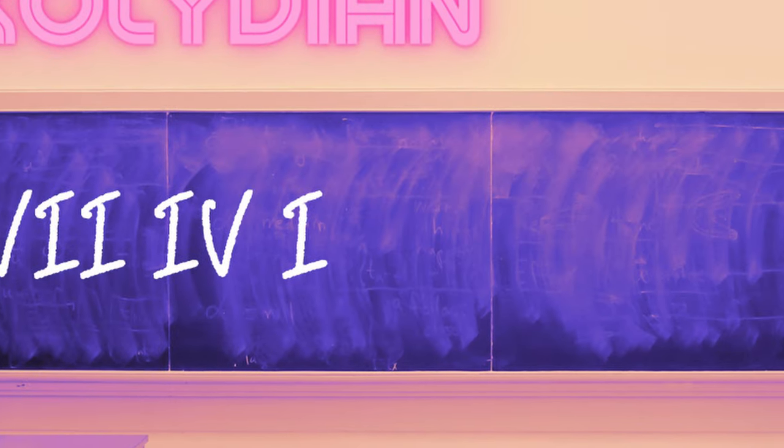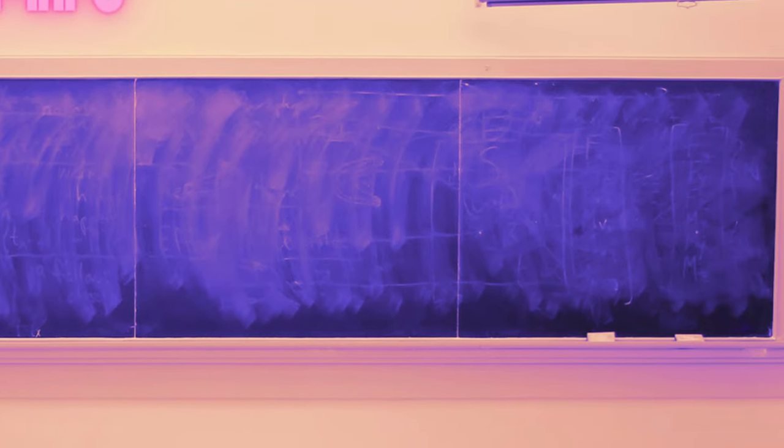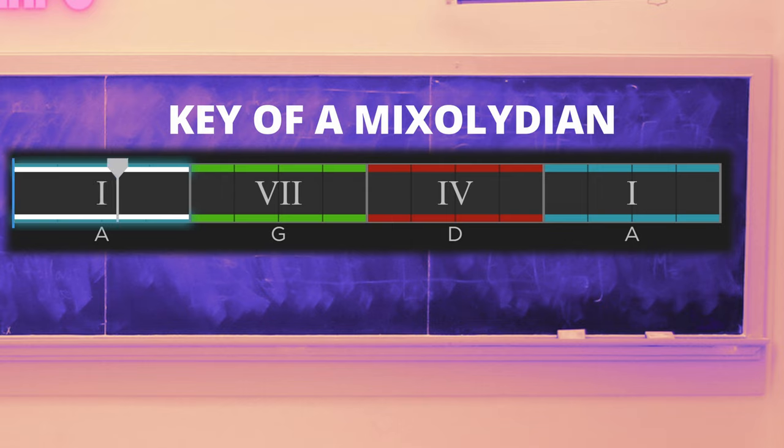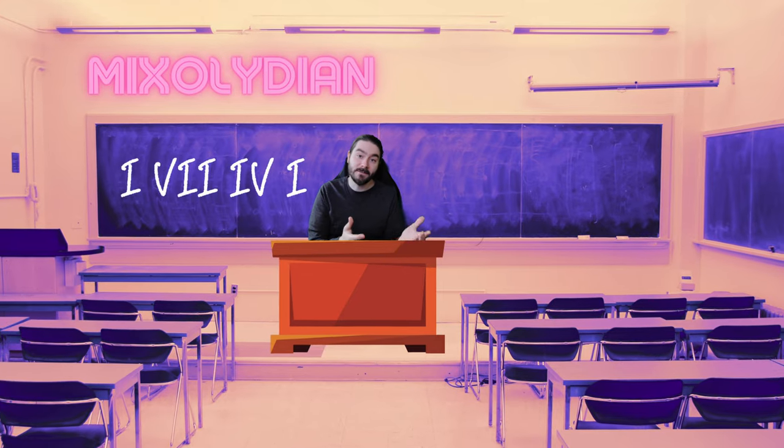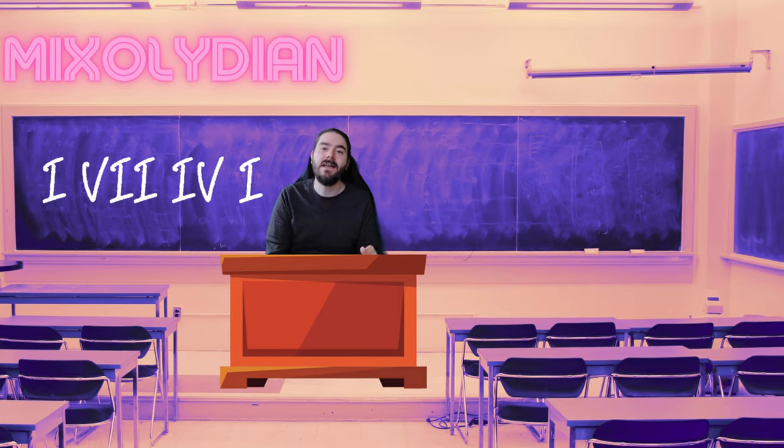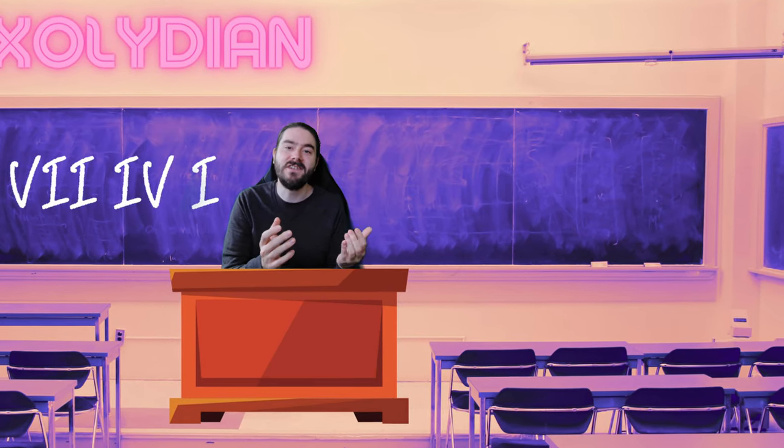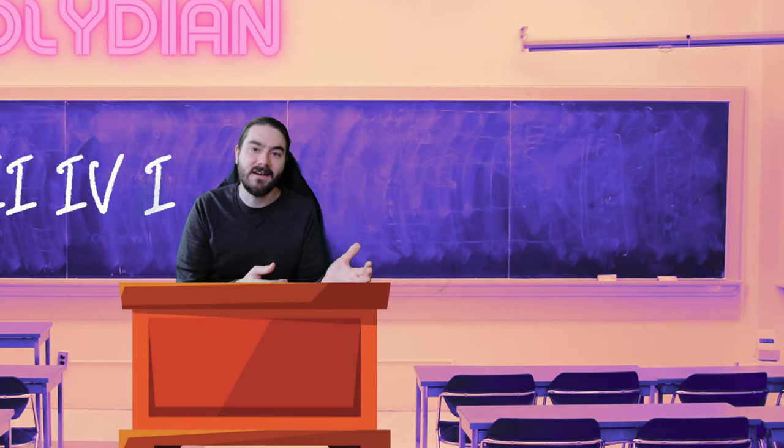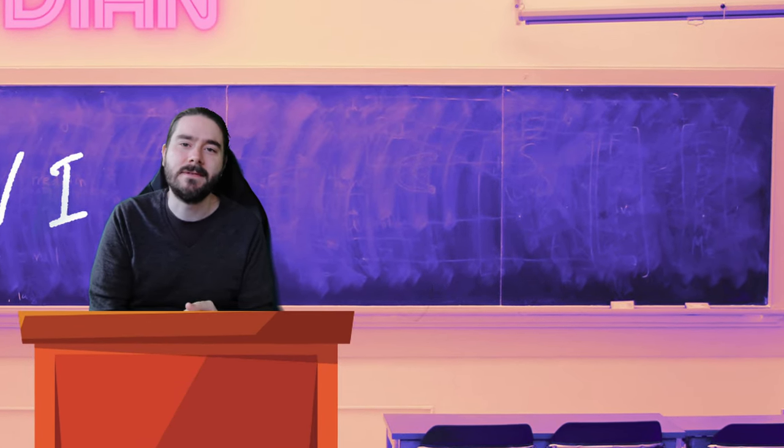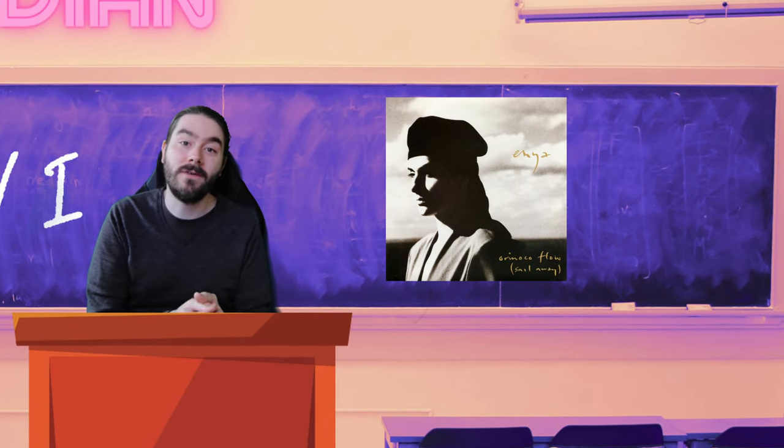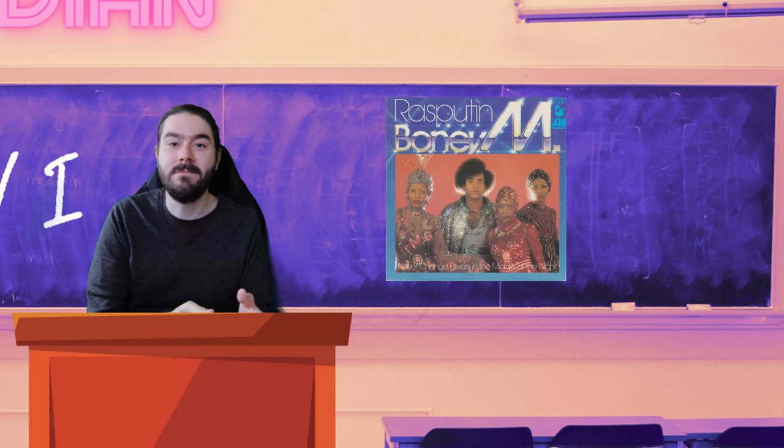Our first lecture here concerns the 1-7-4-1 progression. This is the most popular Mixolydian progression and it uses the 7 chord I mentioned earlier. It is easy to play on the guitar, uses all major chords and defines the Mixolydian sound. Examples include Orinoco Flow by Enya and Rasputin by Boney M.